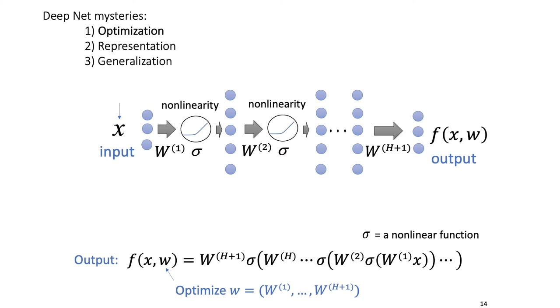As a mathematician working with deep learning, there are three major mysteries. First is the optimization, second is the representation, and third is generalization.